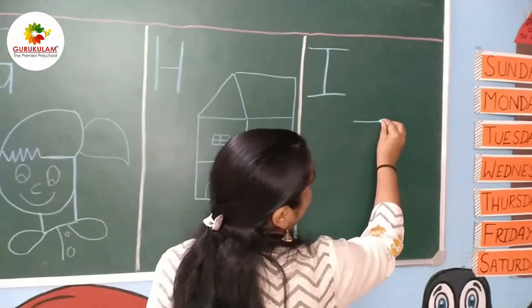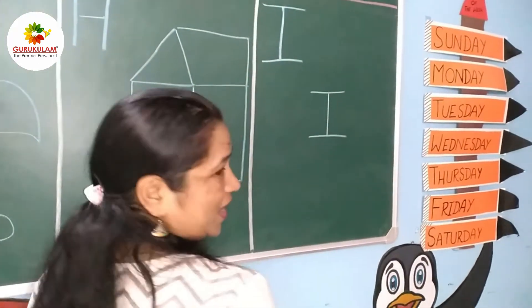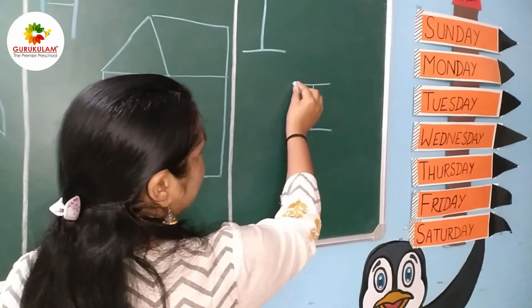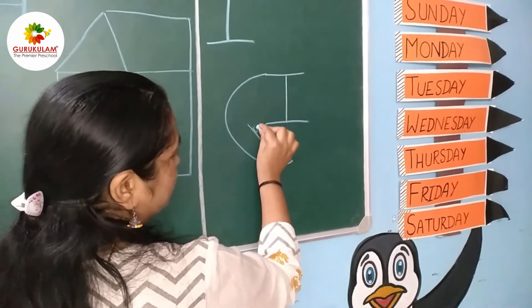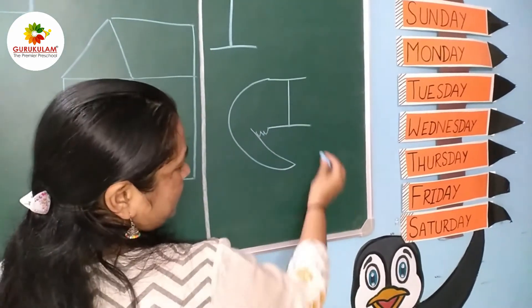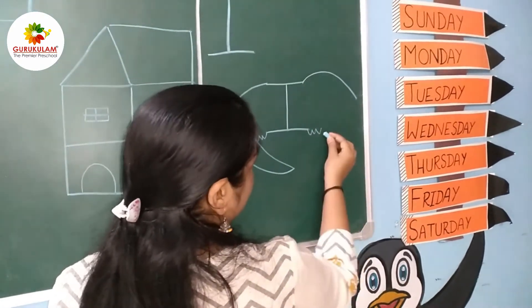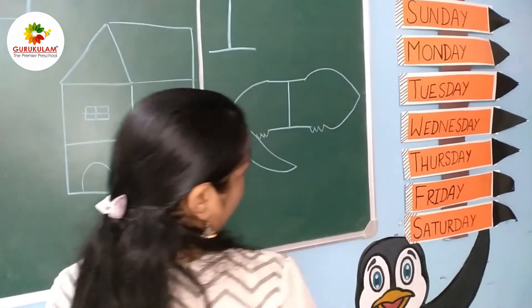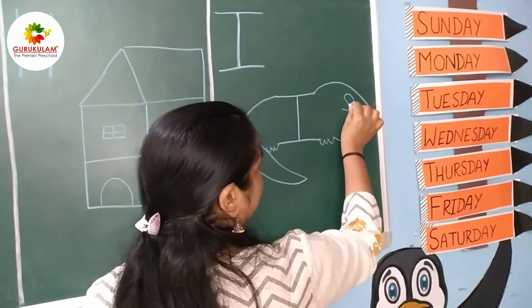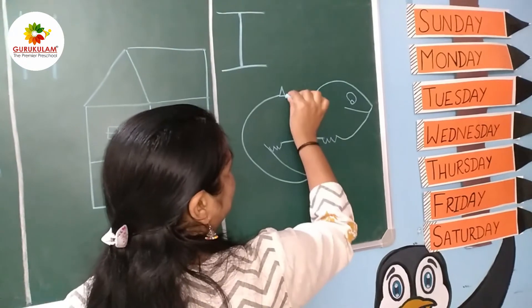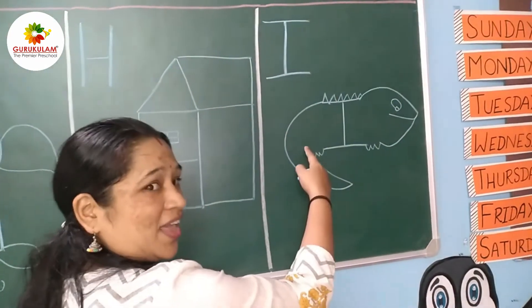Let's see. We are going to draw with the help of the I letter. This is our capital R. Up, we go inside, and big up. I for Ikwana.